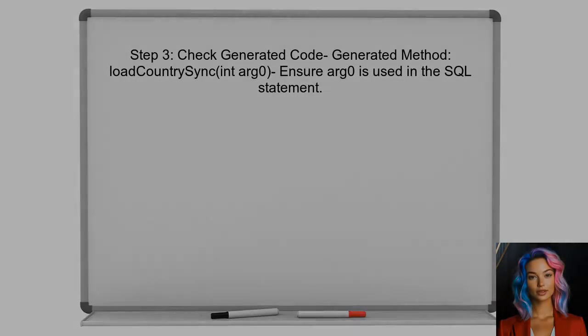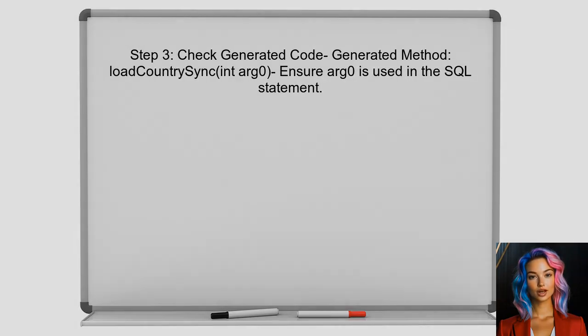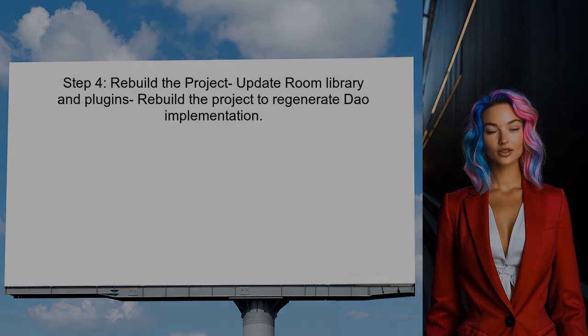If the user is still encountering the error, they should check for any potential issues in the generated code — the generated method should use the parameter correctly. Finally, if the user has updated their Room library or plugins, they should rebuild the project. This can resolve issues related to outdated generated code.